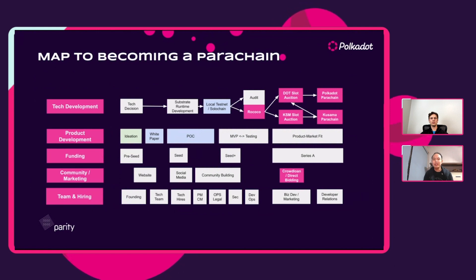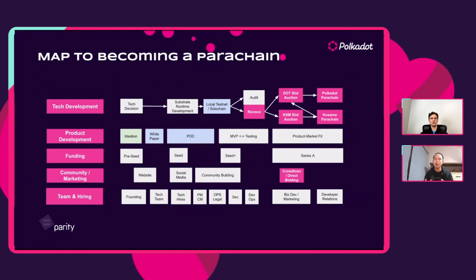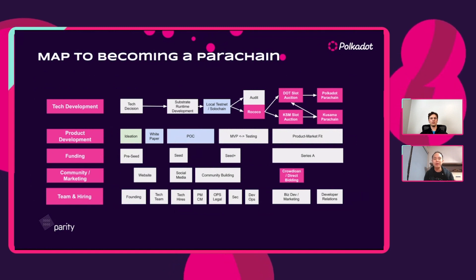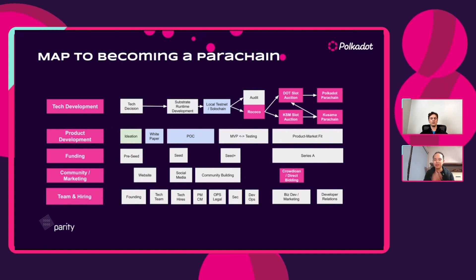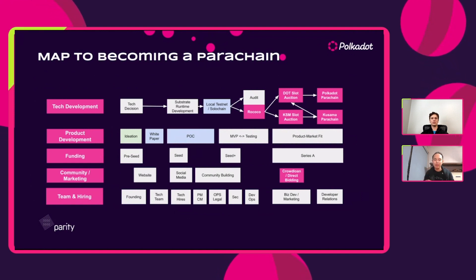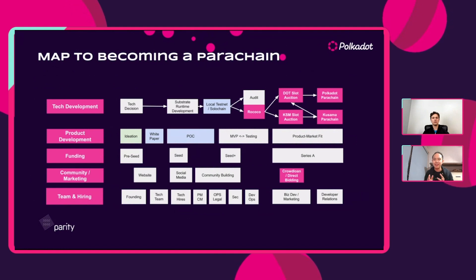The road to launching a parachain isn't very different from building a blockchain from scratch. Becoming a parachain essentially means becoming a fully sovereign blockchain, but Polkadot and Substrate make this process almost as seamless as you can ever achieve with such a technology. There are multi-dimensions you always have to take note of — mostly tech development, but also product development, funding, marketing, and team hiring. Today we want to focus on the areas unique to Polkadot and the ability to become a parachain.